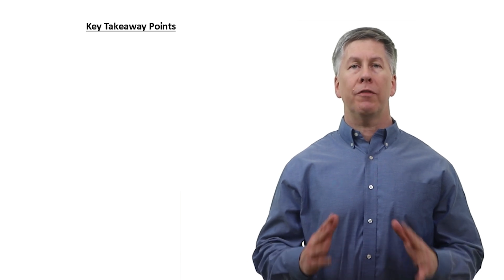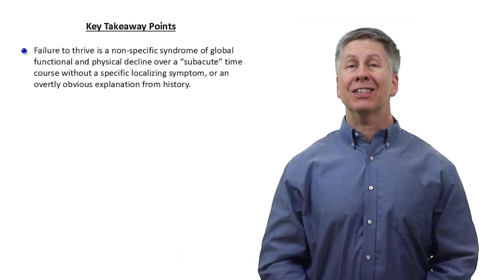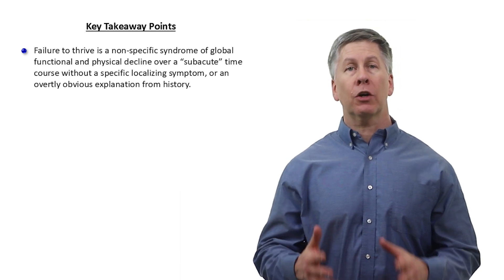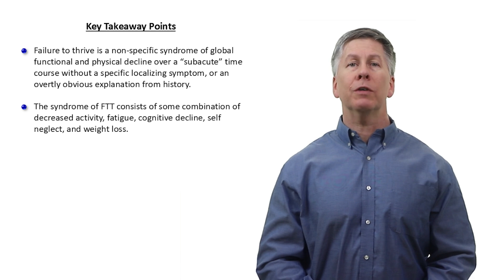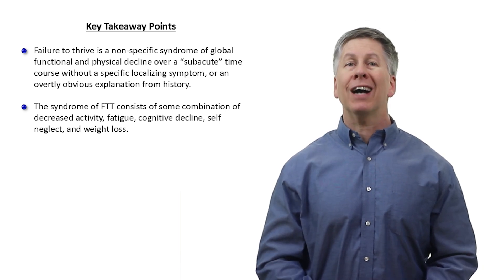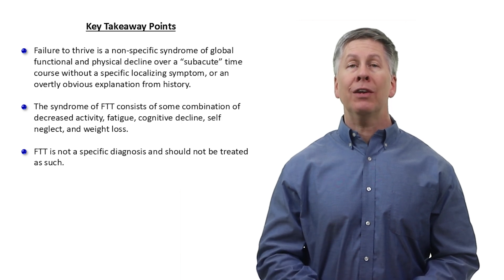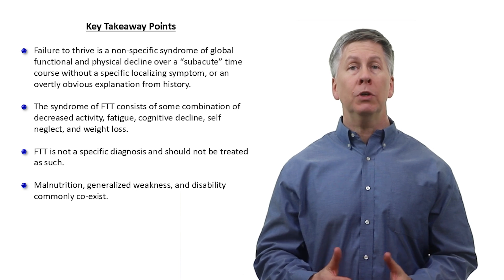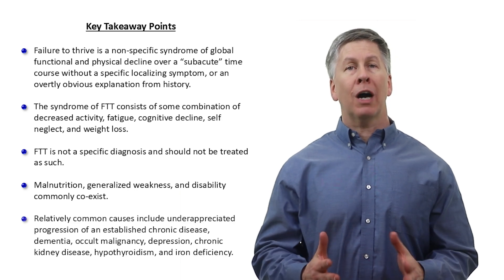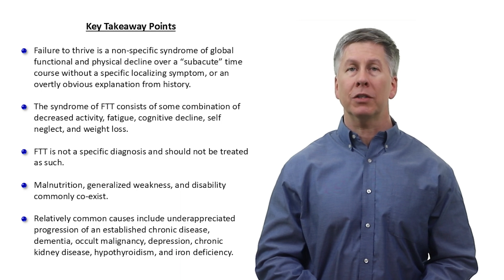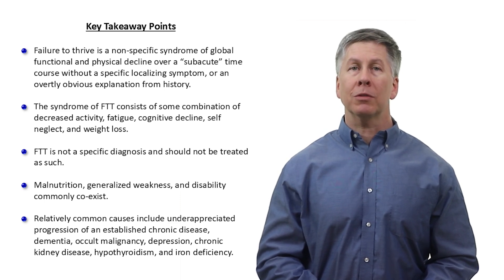The key takeaway points of the video: Failure to thrive is a nonspecific syndrome of global functional and physical decline over a subacute time course without a specific localizing symptom or an overtly obvious explanation from history. The syndrome consists of some combination of decreased activity, fatigue, cognitive decline, self-neglect, and weight loss. It is not a specific diagnosis and should not be treated as such. Malnutrition, generalized weakness, and disability commonly coexist. Relatively common causes include underappreciated progression of an established chronic disease, dementia, occult malignancy, depression, chronic kidney disease, hypothyroidism, and iron deficiency.